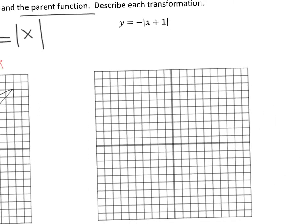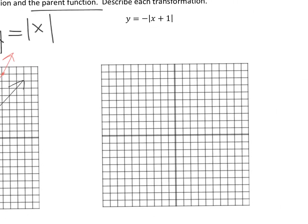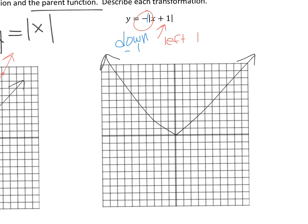For the second example, first graph the parent function. This function is shifted left 1, and the negative in front means it's opening down — it's a reflection over the x-axis with slope negative 1. It's not a vertical stretch or shrink, just opening down. So place the vertex at left 1, then draw arms downward with the same width as the parent function.